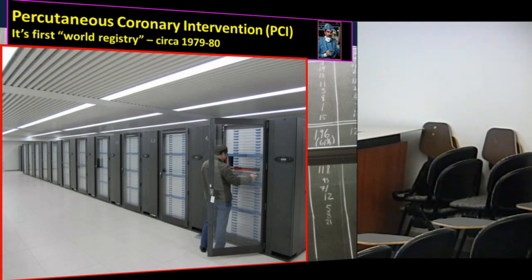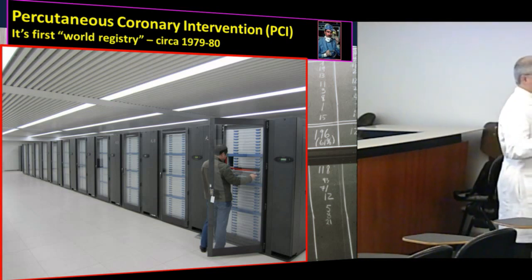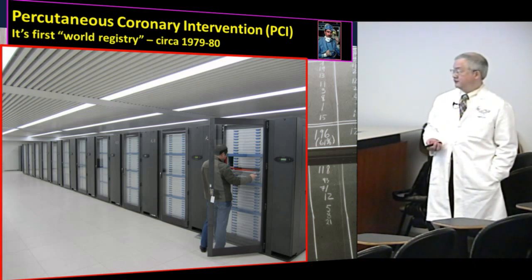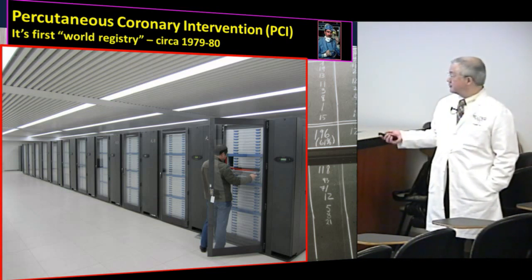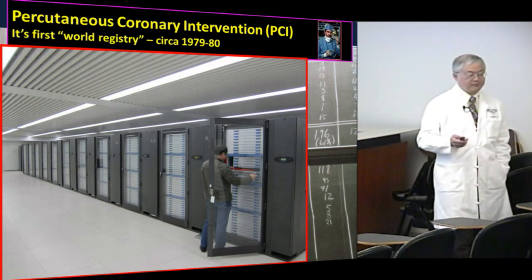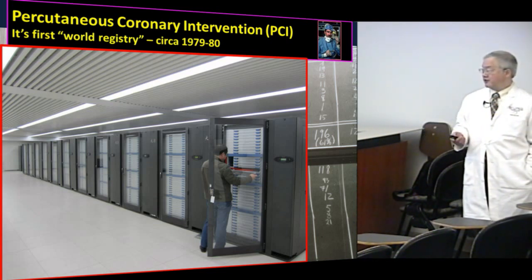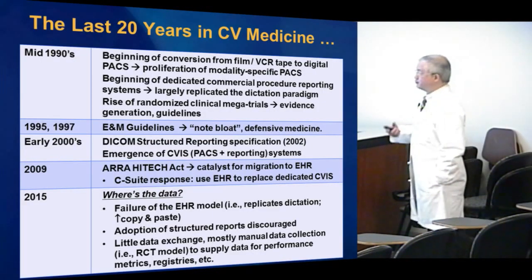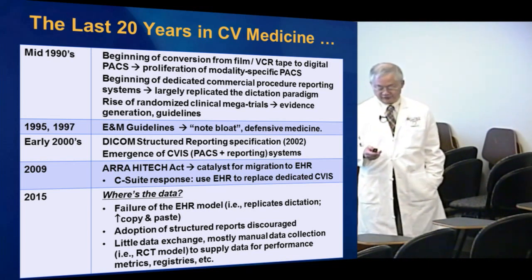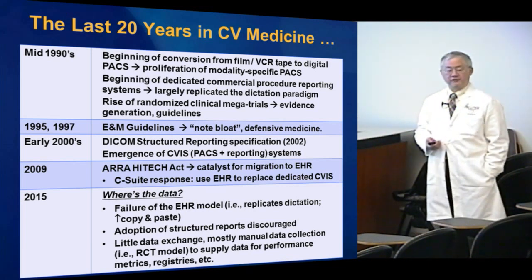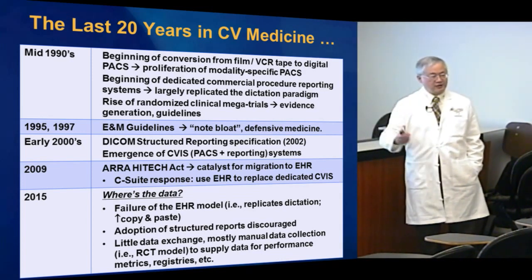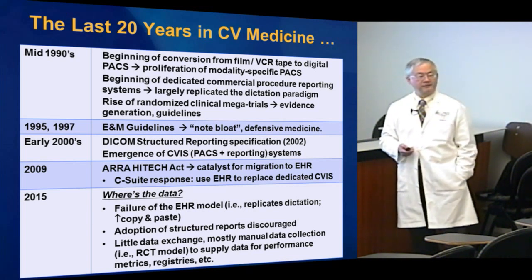This is an interesting picture from the archives of the American College of Cardiology. The first angioplasty registry was initiated back in 1986, and this is the system they were using. All the computational power you see here would fit on a laptop today — a pretty amazing picture from the archives. The point is that in the interventional cardiology world, we've been interested in data really from the get-go.